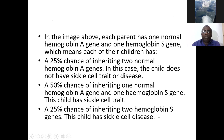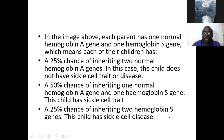In the image, each parent has one normal hemoglobin A gene and one hemoglobin S gene. Each of their children has a 25 percent chance of inheriting two normal hemoglobin A genes — in which case the child does not have sickle cell trait or disease. They have a 50 percent chance of having sickle cell trait. Another 25 percent will inherit S from each parent and get the full-blown disease.